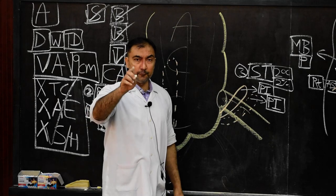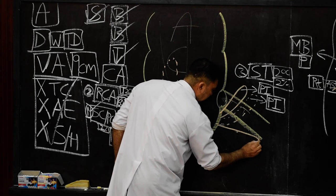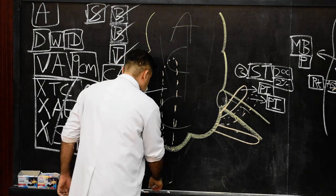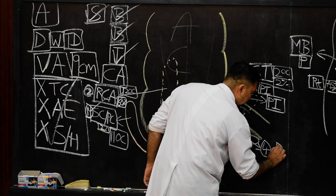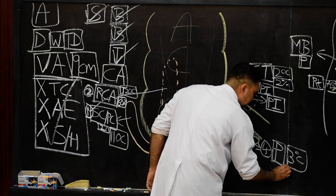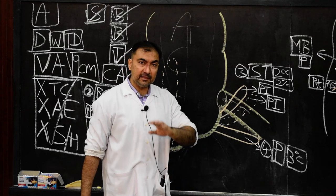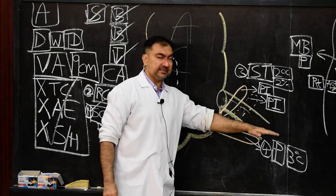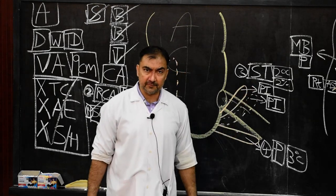Fourth is the promontoric type, three o'clock position. The entire appendix is directed horizontally toward the sacral promontory — that is why it is called the promontoric position. This is a very rare condition.